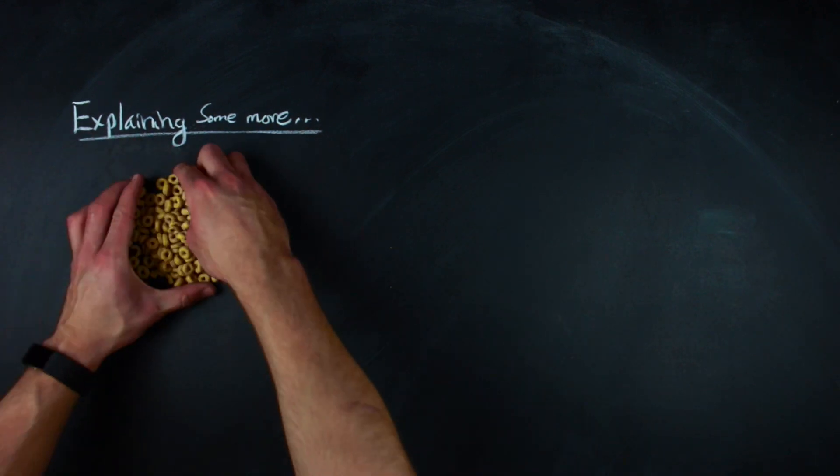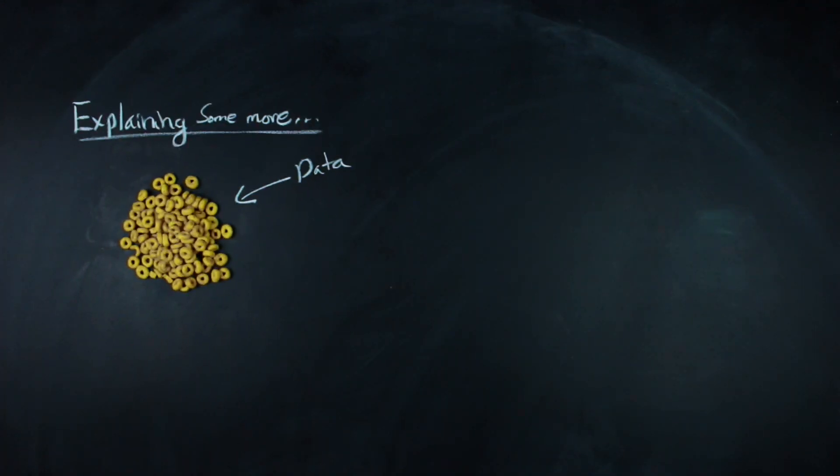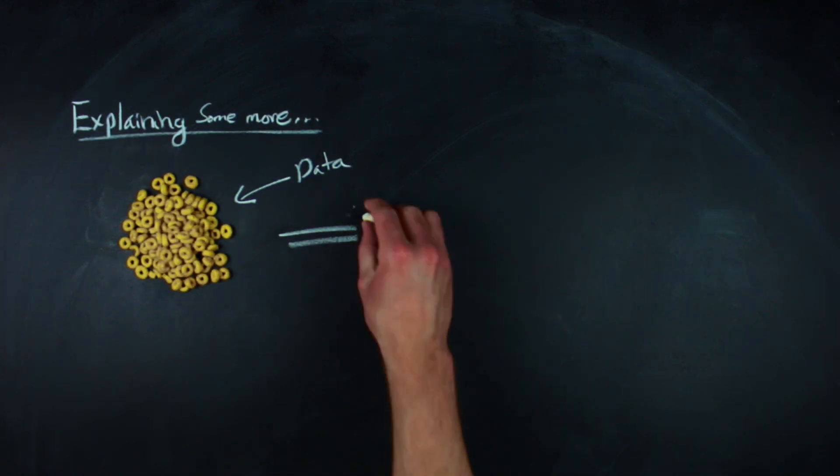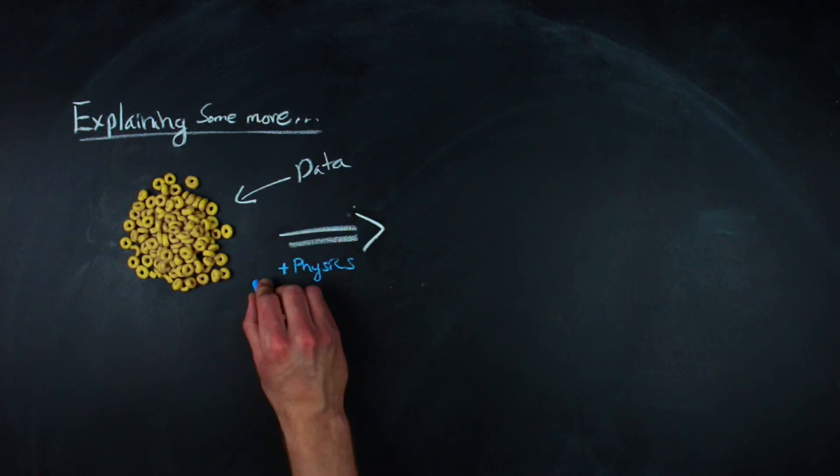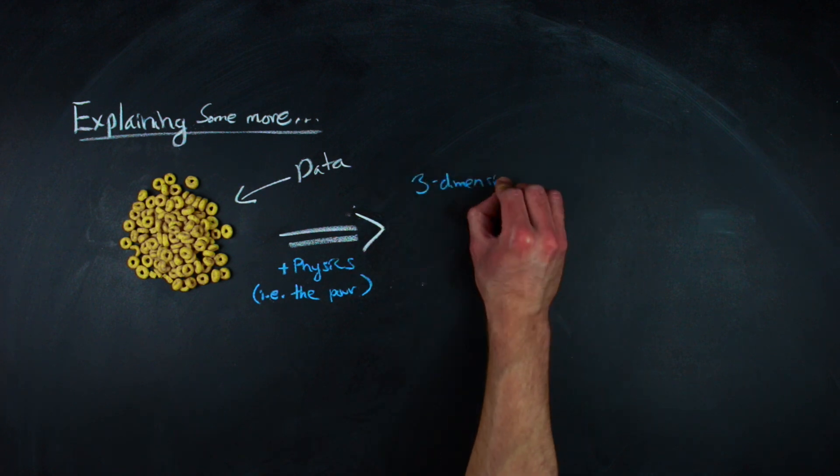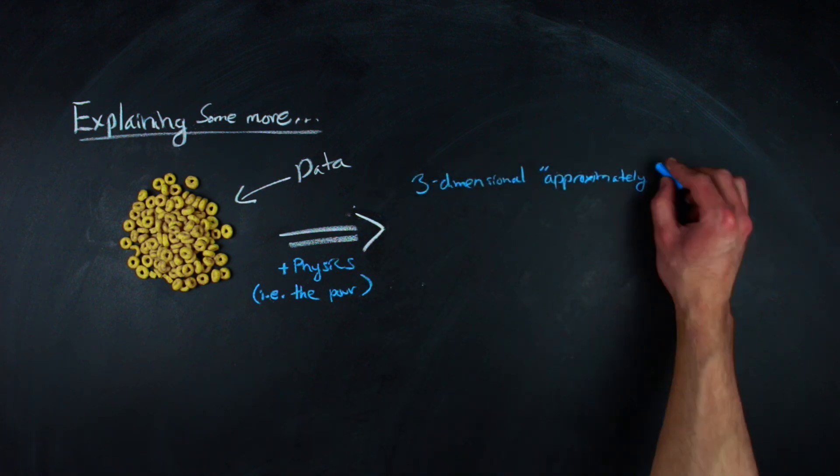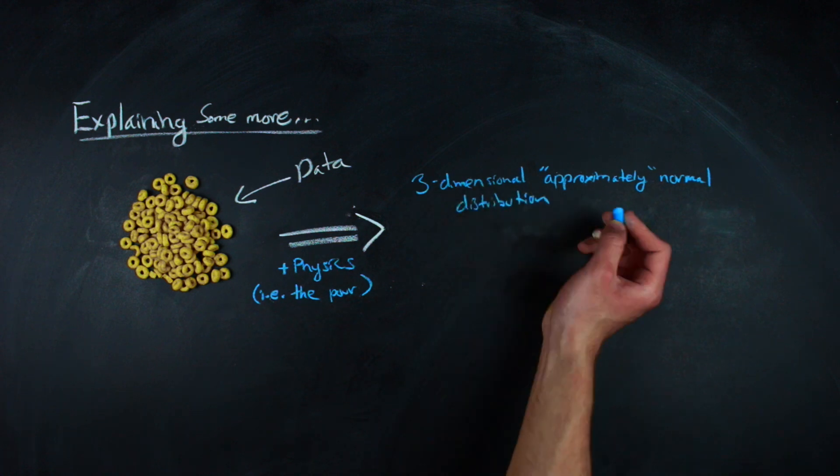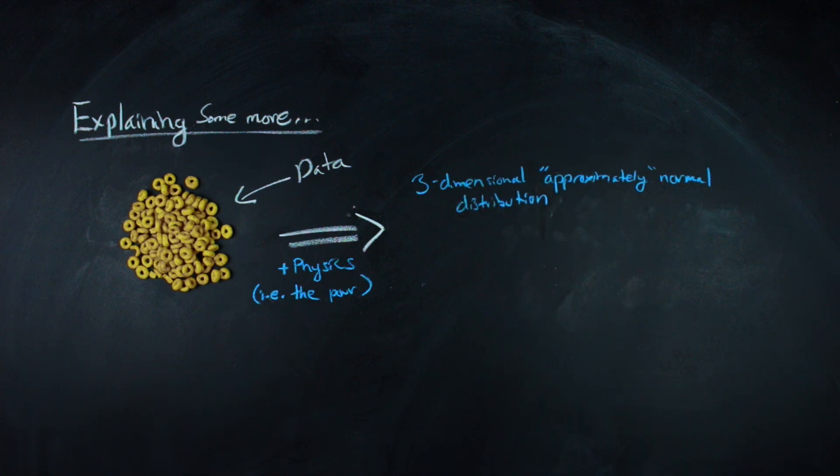From a more statistical realm of thinking, each of the Cheerios was a piece of data in our sample. The initial pour gives us a three-dimensional approximately normal distribution, but for simplicity, I'll avoid describing most of the details in the three-dimensional case, as it requires a bit more understanding of the two-dimensional case, which is the focus of this video.